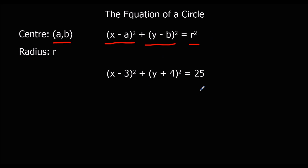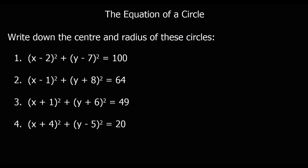Looking at this equation here, we can see that the centre will be (3, -4) and the radius will be 5. So as long as an equation of a circle is in this form, we can tell what the centre and radius are. Here we've got some examples in this form — just write down the centre and the radius of these circles.